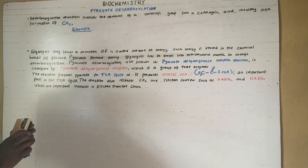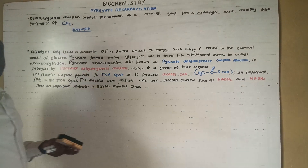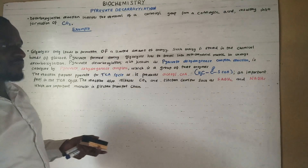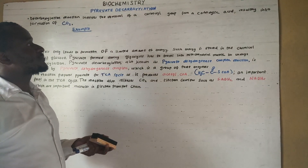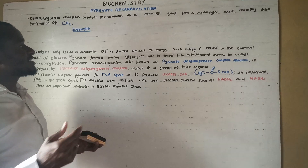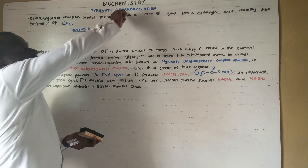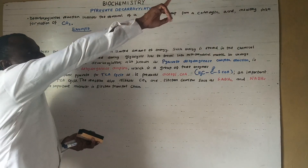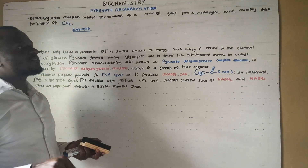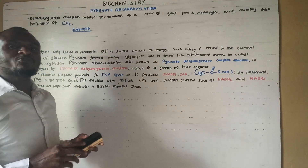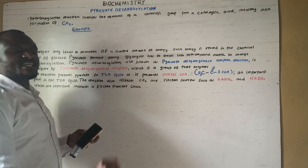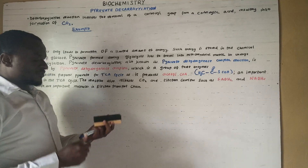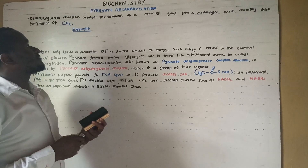Let us look at pyruvate decarboxylation. Decarboxylation refers to the removal of a carboxyl group from a carboxylic acid, and in the process carbon dioxide is kicked out.